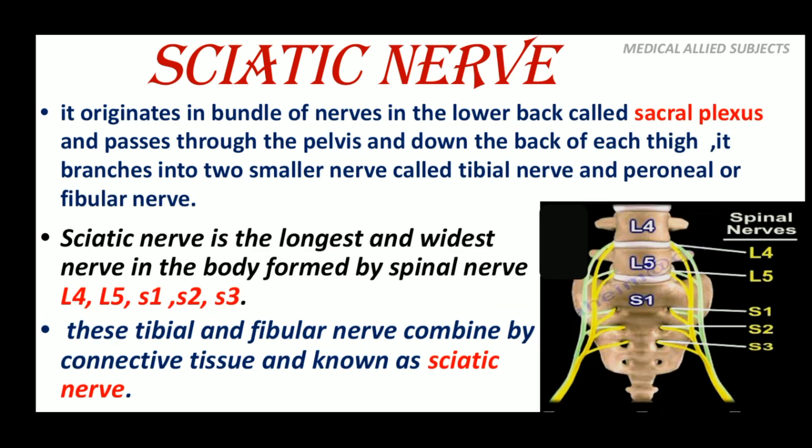The sciatic nerve is the longest and widest nerve in the body, formed by spinal nerves L4, L5, S1, S2, and S3. It originates in a bundle of nerves in the lower back known as the sacral plexus and passes through the pelvis and down the back of each thigh. It branches into two smaller nerves called the tibial nerve and the peroneal or fibular nerve, which are combined by connective tissues and known together as the sciatic nerve.